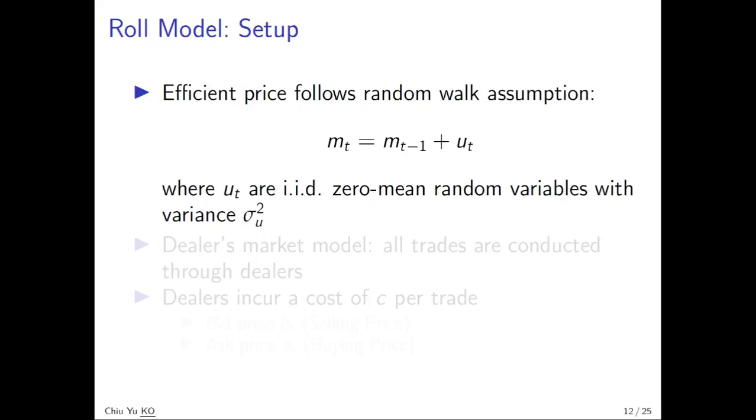This model is different from others in that it assumes it is a dealer market. Basically all trades are conducted through dealers, and this has been true in the US stock market before the 90s. Every stock has one or several specialists, so everyone will buy and sell with the dealers, and the dealer will tell you every point in time what is the buying price and selling price. In other words, the dealer sets up the bid-ask spread.